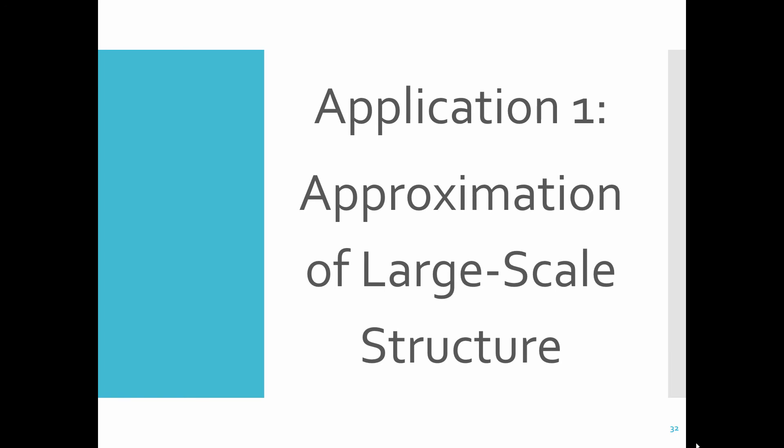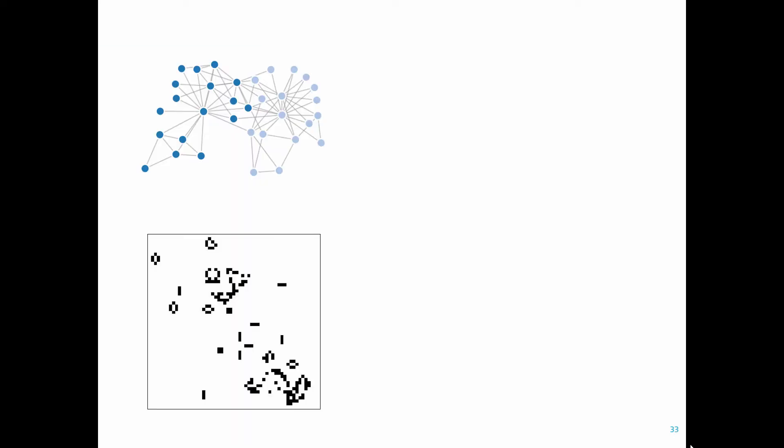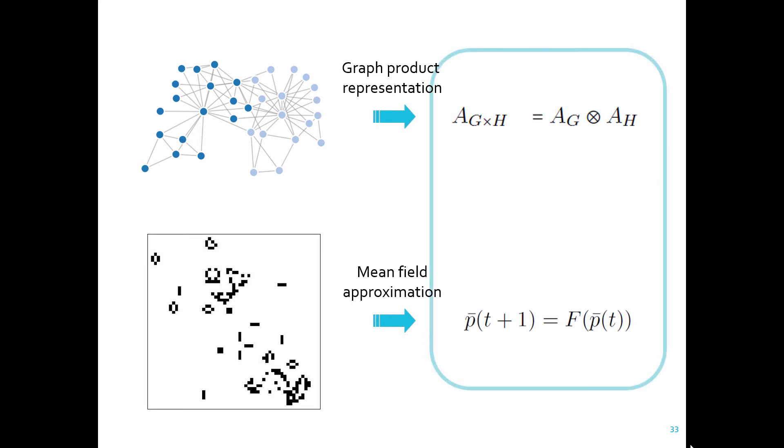In the rest of this talk, I would like to present some of the applications of graph product multi-layer networks to convince you that this can be a useful theoretical framework. One possible scenario of its application is to approximate the structure of large-scale networks so that you can make an analytical estimate of their spectral properties. This is kind of similar to what the mean field approximation does to the analysis of dynamical systems with large degrees of freedom. It doesn't capture the true complexity of the actual system, but it provides theoretically meaningful reference values, which may still be very useful.